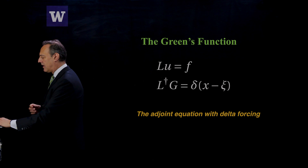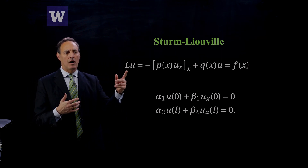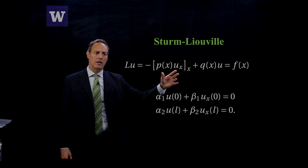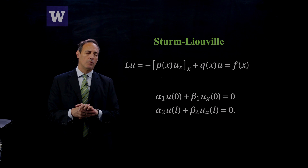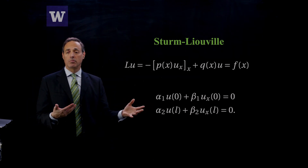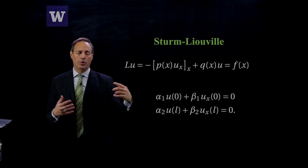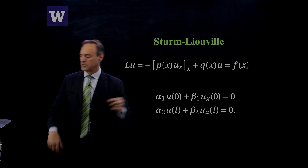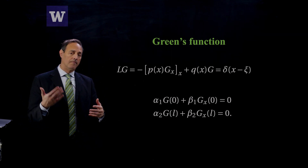Let's talk about that L operator. That's for a non-self-adjoint or generic case, but when we talk about Sturm-Liouville operators, the L operator takes a very specific form, where p and q are both positive functions on the interval of interest. The Sturm-Liouville operator is self-adjoint, which means the Green's function is going to have the same boundary conditions and the same operator. So the Green's function problem is exactly the same problem but with the forcing being a delta function instead of f of x.